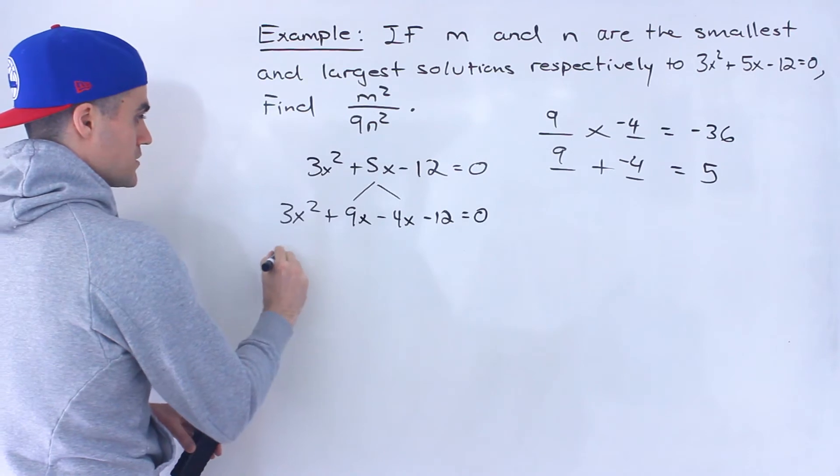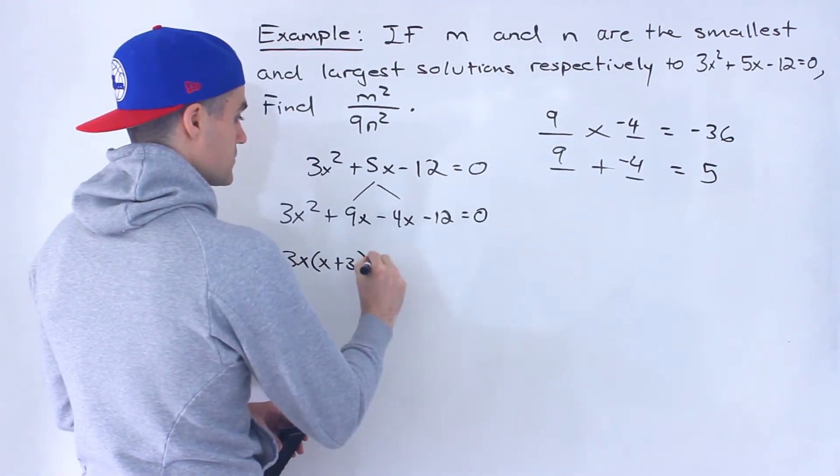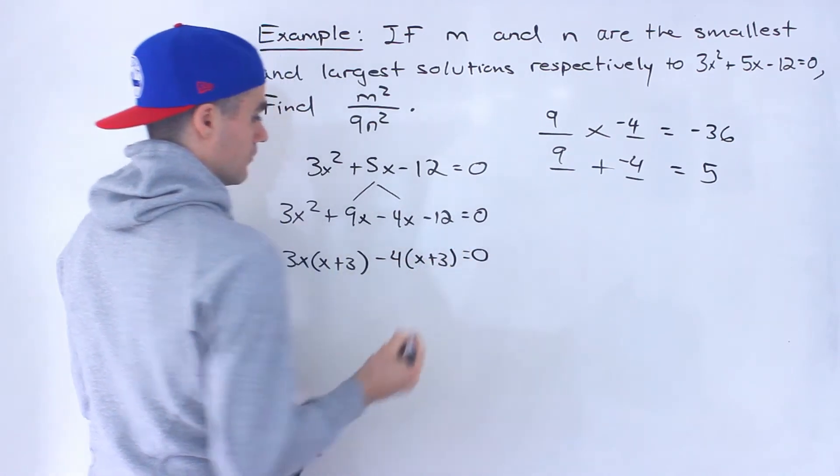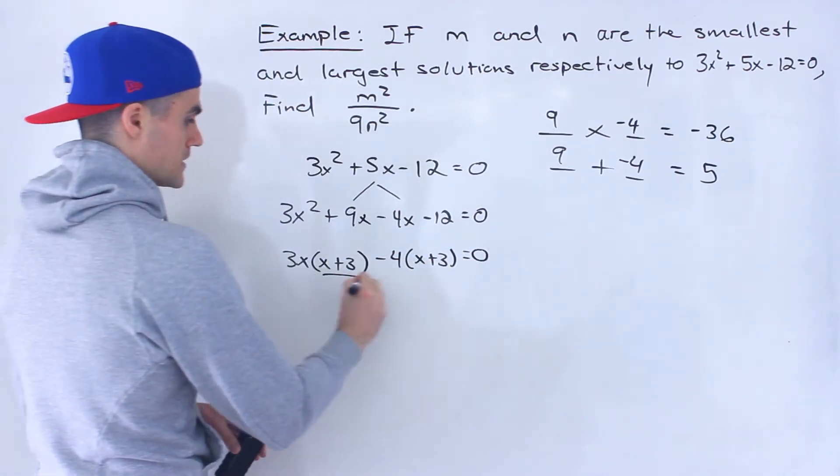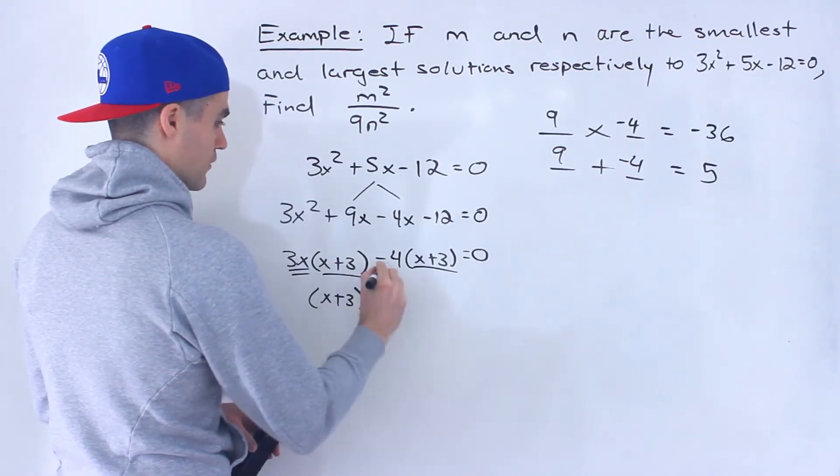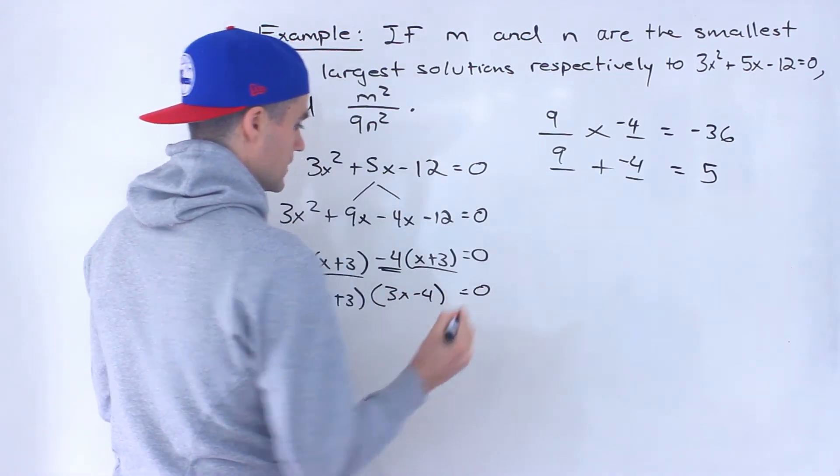And then notice from these two we could take out a minus 4, like that. And then we could take out an x plus 3, and then we're left with a 3x minus 4 is equal to 0.